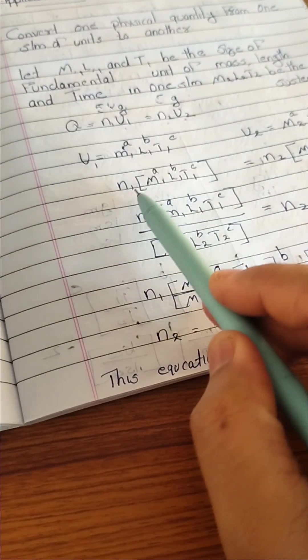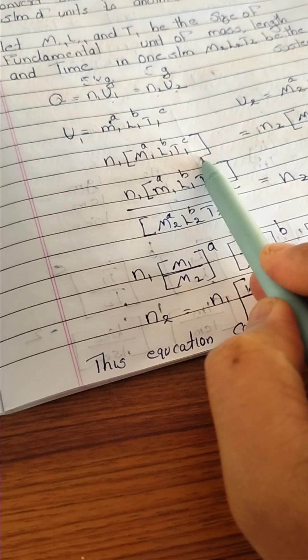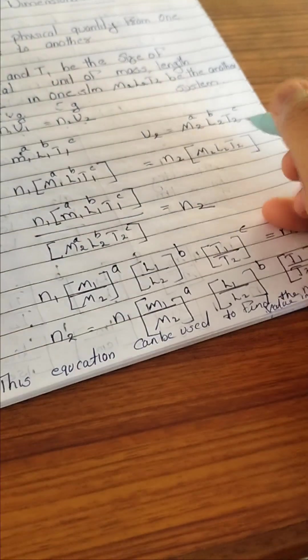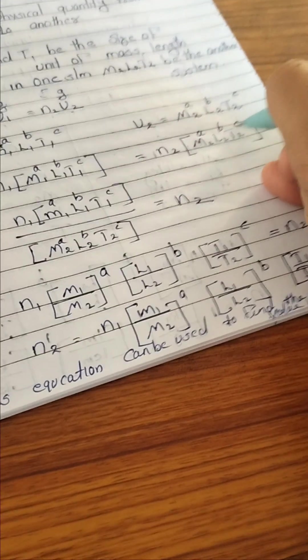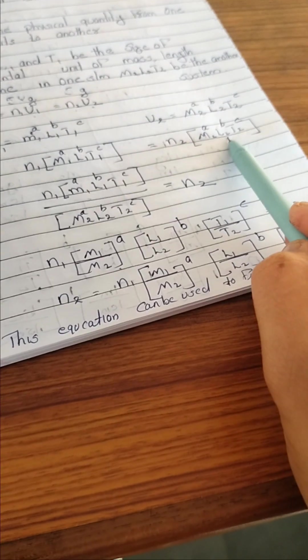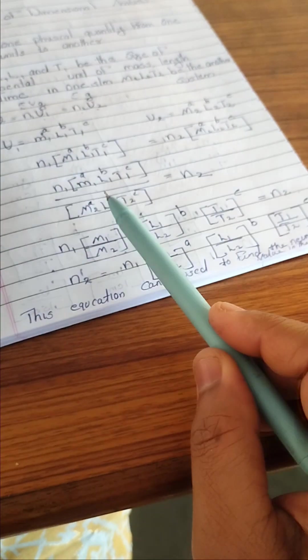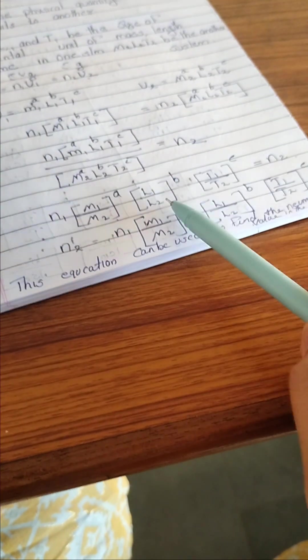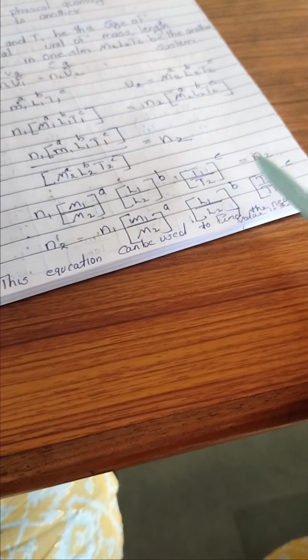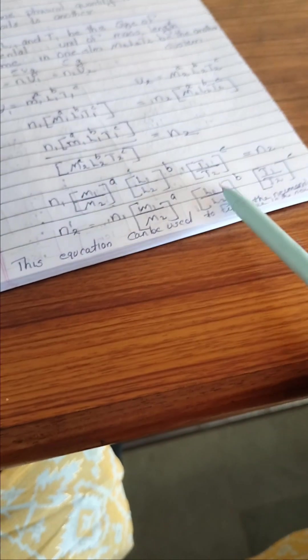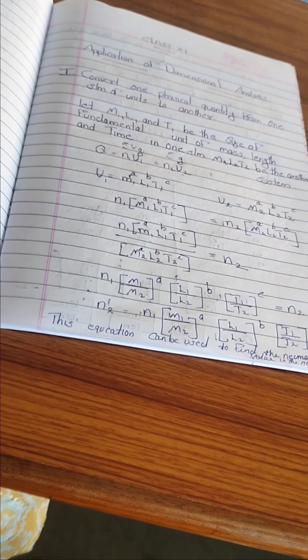So apply here. N1, numerical value, U1 of the first system M1, L1, T1, powers A, B, C. Second unit of system, N2, U2 value M2, L2, T2, powers A, B, C. Then first system of unit, numerical value, unit. Second system of unit, numerical value, unit. This N2 we want to find out. So take this term in the denominator and rearrange. N1, M1 by M2 power is same, L1 by L2 power B, T1 by T2 power C equal to N2. So N2 equal to N1 of M1 by M2 power A, L1 by L2 power B, T1 by T2 power C. This is the general expression of conversion of one physical quantity to another.